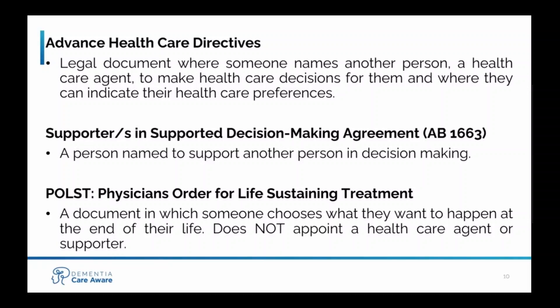There are also supporters in a supported decision-making agreement, new to California as of 2023. This is a person named to support another person in decision-making. Unlike a person named in an advanced health care directive, they cannot make decisions for a person or sign any forms — their role is to support the patient in decision-making. Supported decision-making agreements are a brand new tool in California, and it's not yet clear how they will apply to people with dementia. We always recommend that people have an advanced health care directive and financial decision-making tools in place.